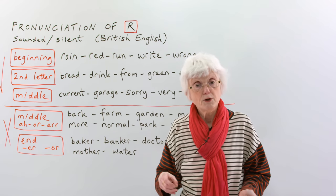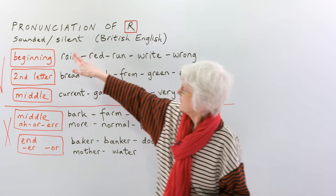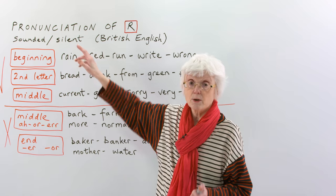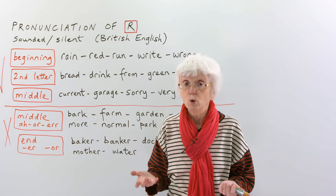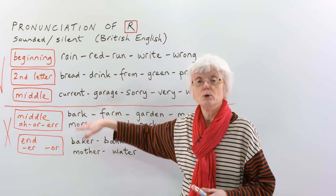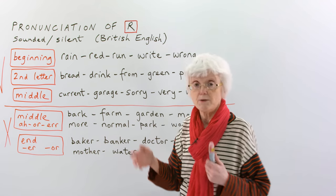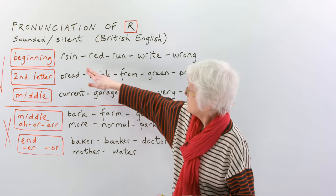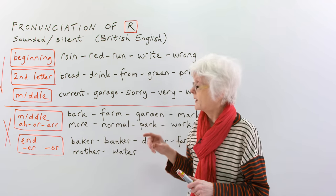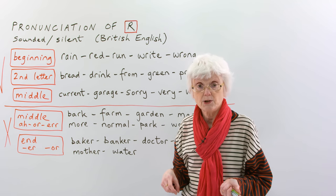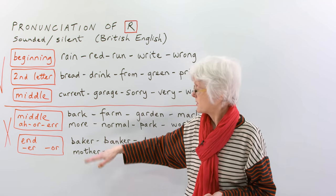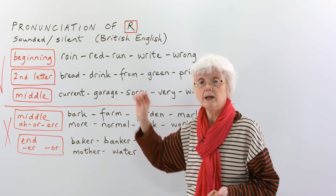This is sometimes confusing because sometimes the R is sounded — like that — and other times it's completely silent and you just get a vowel sound instead. I've got several examples here to illustrate the different variations. The words above the line are ones where the R is pronounced, and below the line are words where the R is not pronounced. Let's look at the top three first where the R is pronounced.